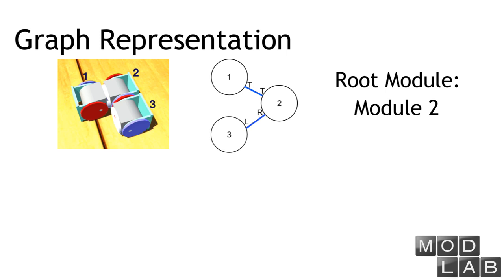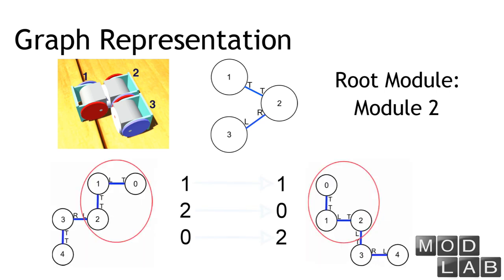We use a graph to represent a modular robot configuration, and using our previous work, we can find the root module of a given configuration in linear time. Given two configurations, the maximum common subconfiguration with respect to a pair of modules can be computed in quadratic time. For example, if module 1 on the left has to be mapped to module 1 on the right, then the subconfiguration encircled by the red line is the maximum common subconfiguration, and the mappings are 2 on the left to 0 on the right, and 0 on the left to 2 on the right.